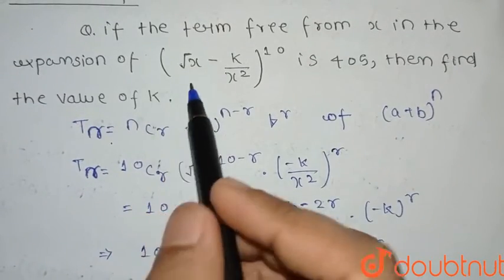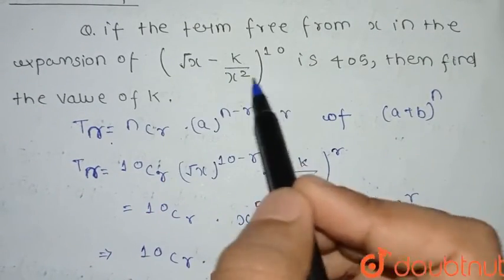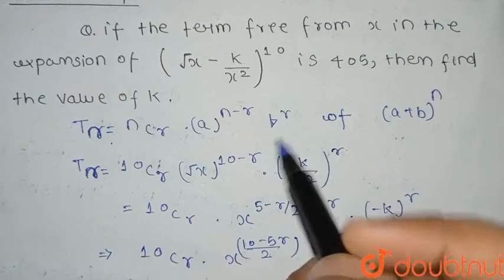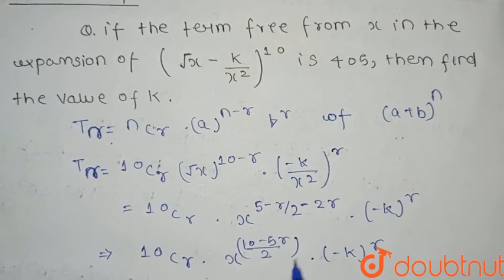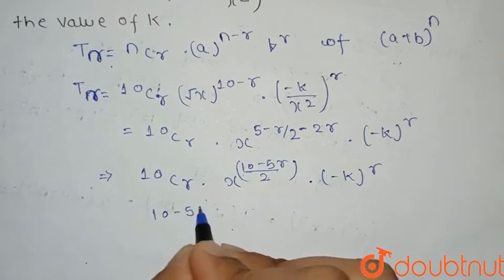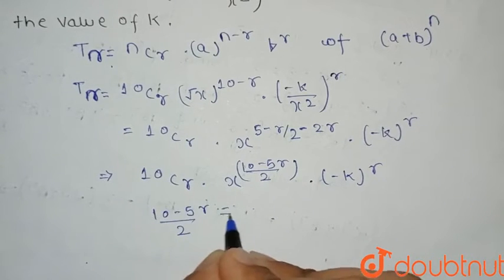Here it is given that the term is free from x. That means the term is free from x when this term will become 1, and this term will become 1 if the power of x will become 0. That means (10 - 5r)/2 should be equal to 0.